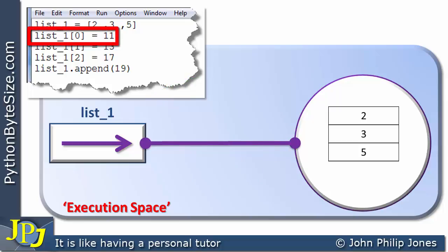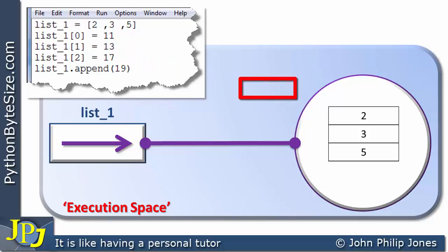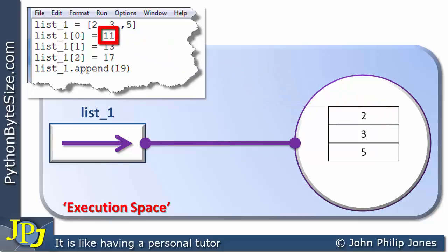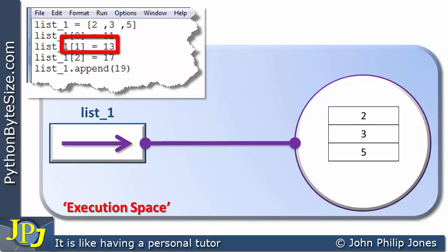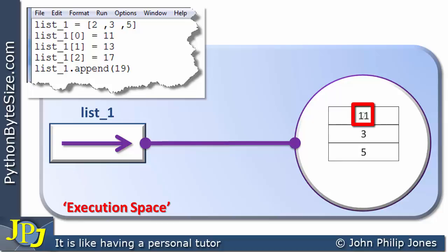If we consider this particular line of code, we're referencing list_one, and it is going to be the first element, as shown by the zero index. We're going to be referencing this within the list object, and you can see that 11 is going to be assigned to this. So the two effectively becomes overwritten with 11.